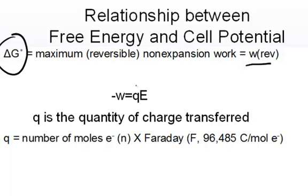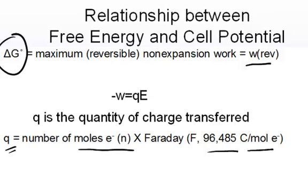Q, the quantity of charge transferred, can be calculated based on the number of moles of electrons, which we abbreviate N, times the Faraday. The Faraday is a constant relating the amount of charge carried by one mole of electrons: 96,485 coulombs per mole of electrons. This gives us a convenient relationship between moles of electrons carried in the current and the charge per mole, allowing us to quantify the amount of charge carried in an electrochemical cell.